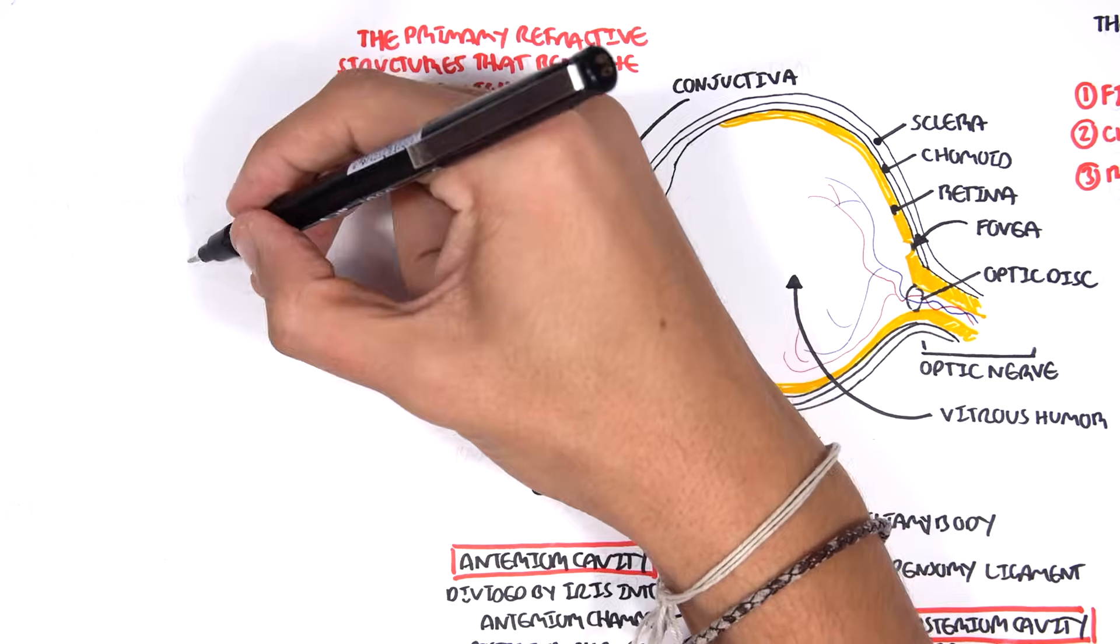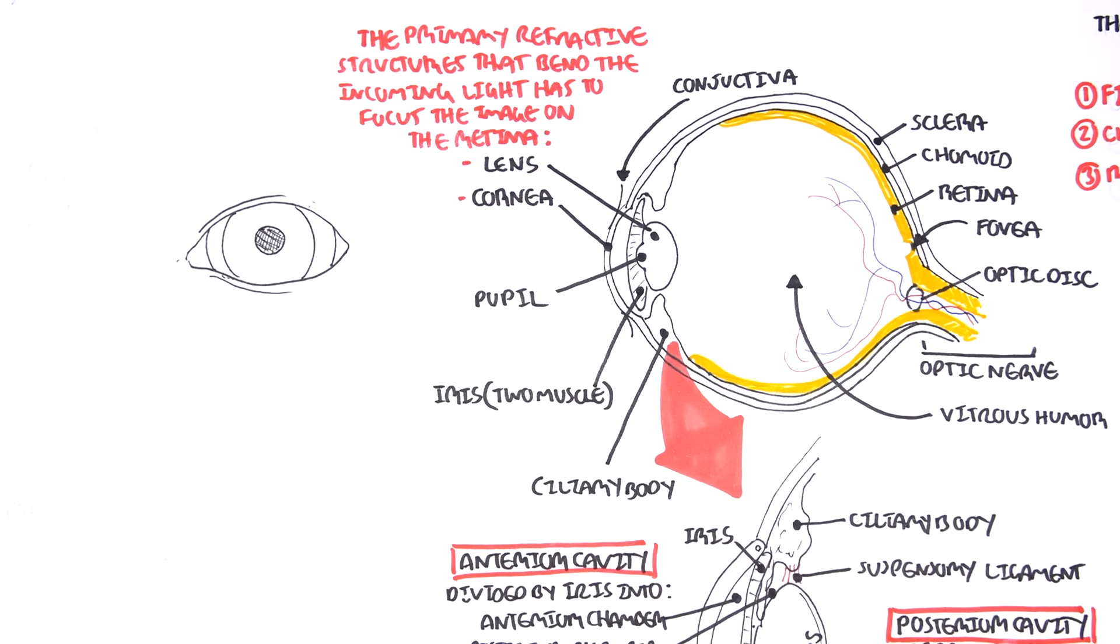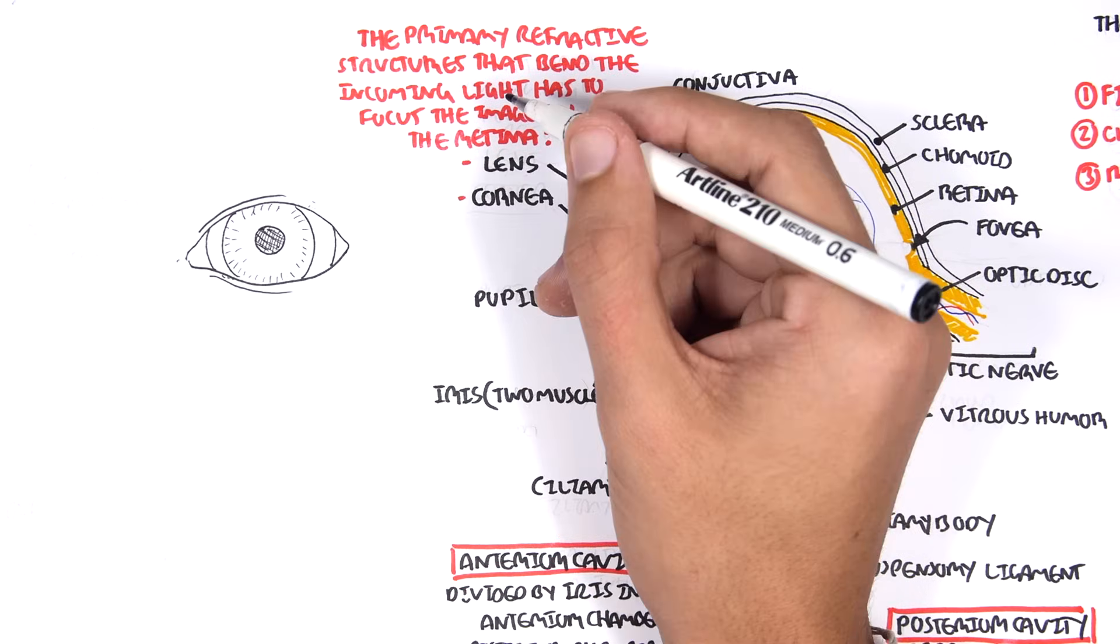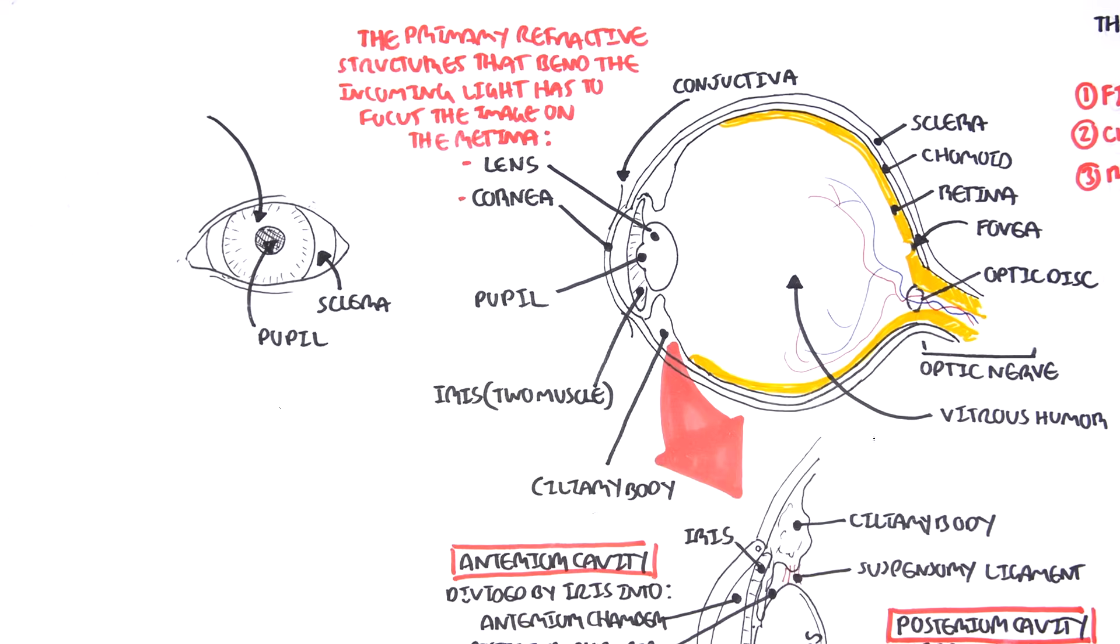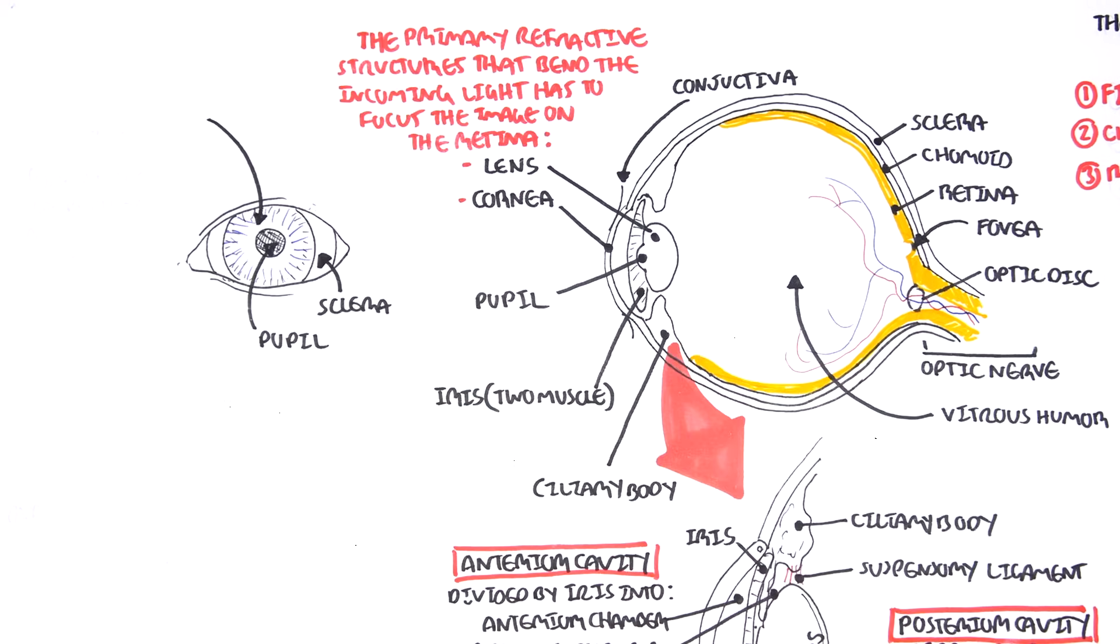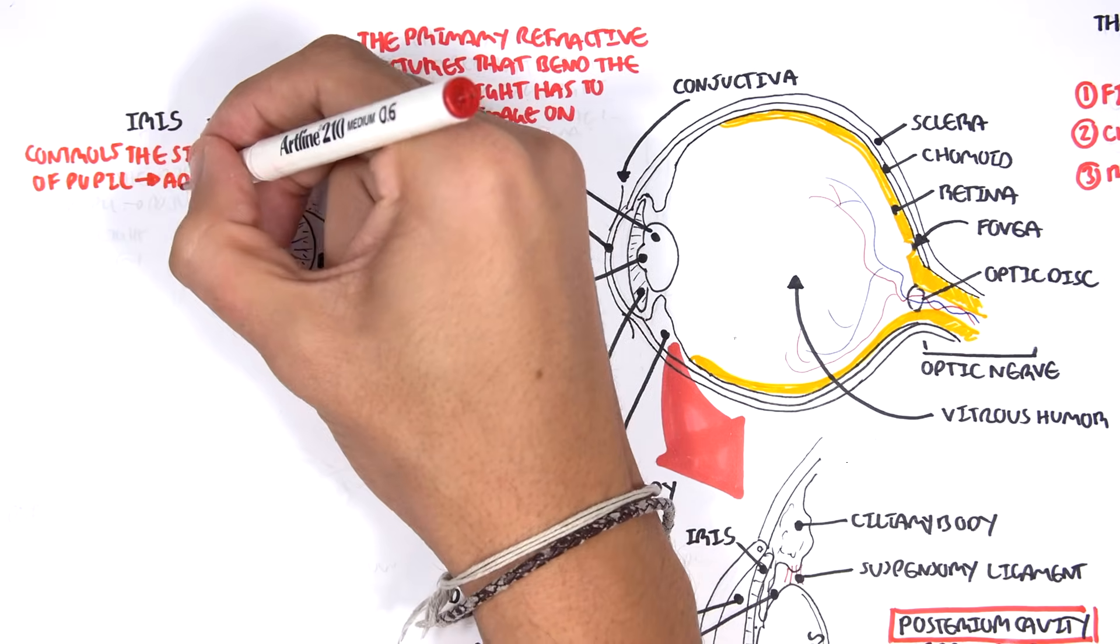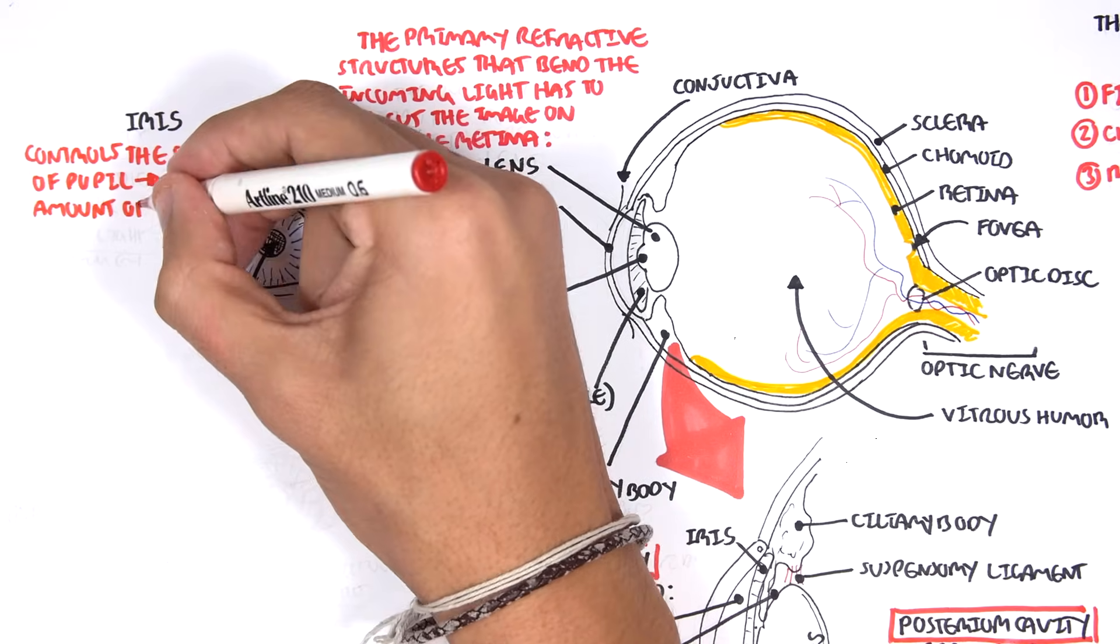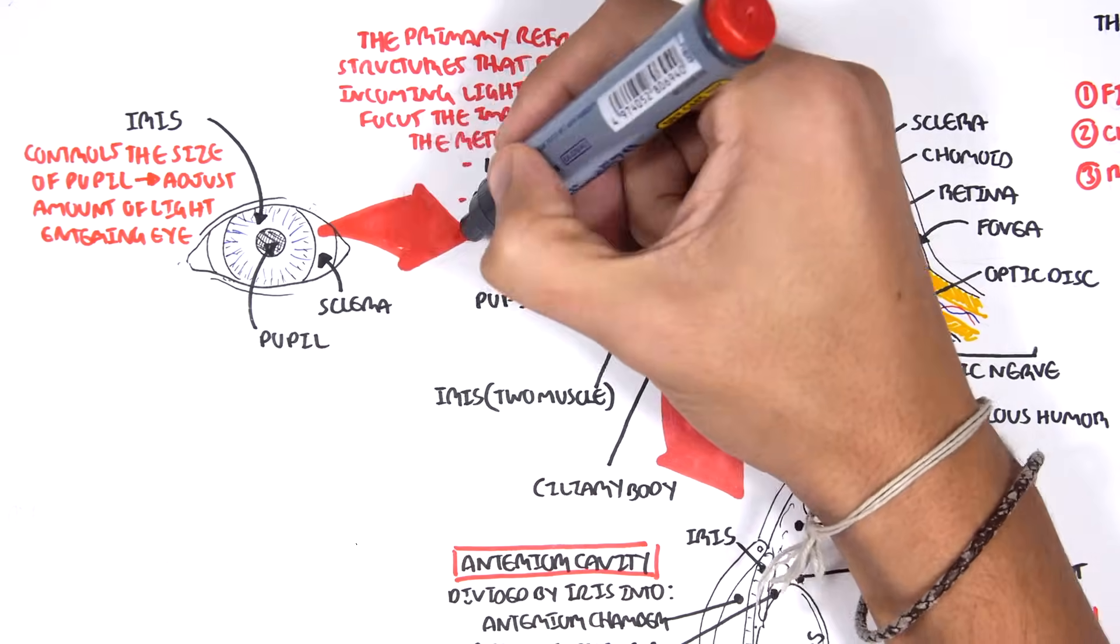Next, let us learn about the iris and pupil and its innervations. Here is the eye from the front. The sclera is the white part of your eye. The pupil is the black part of the eye where light enters. Surrounding the pupil is the iris, and the iris is the color of your eye.